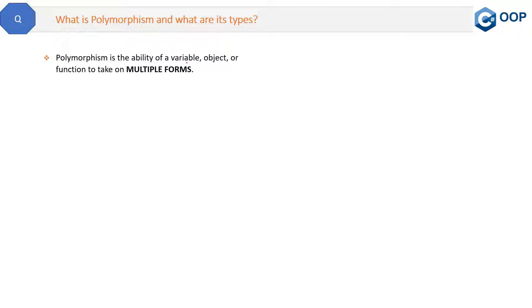Polymorphism is the ability of a variable, object, or function to take on multiple forms. Now what is multiple forms? For example, in English, the word 'running' can be used for running a race or running a business. In both cases the word is the same but the meaning is different. So this is multiple forms. Multiple forms can be achieved in C# via polymorphism.